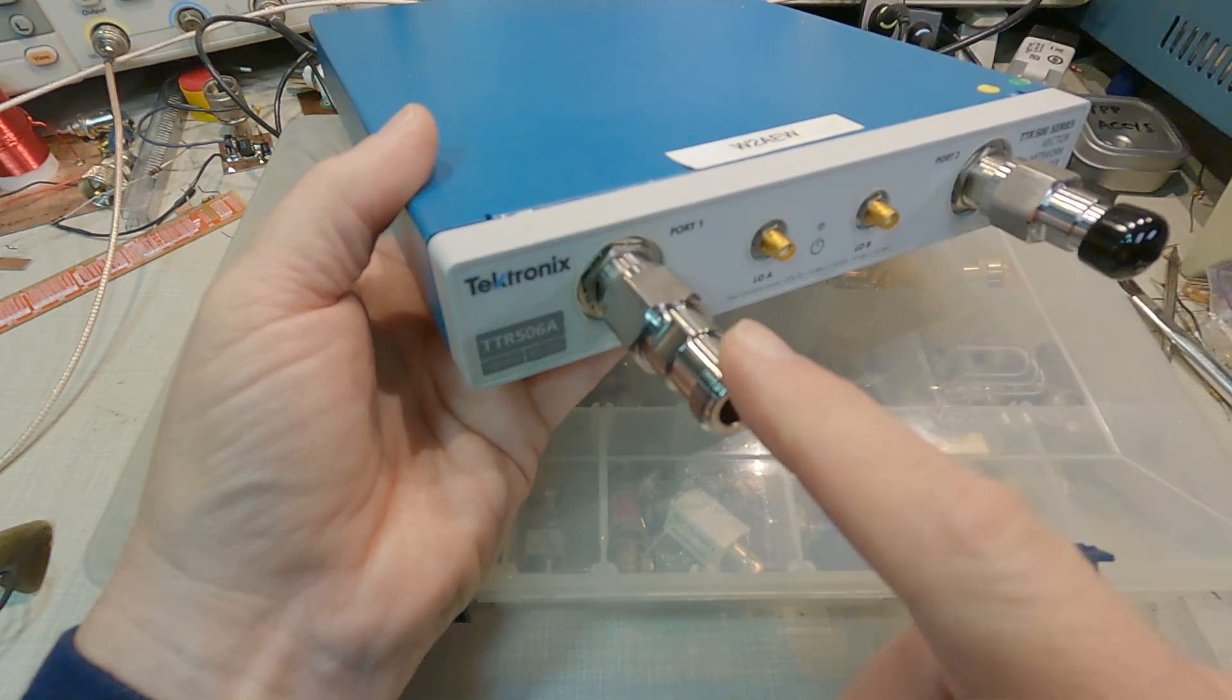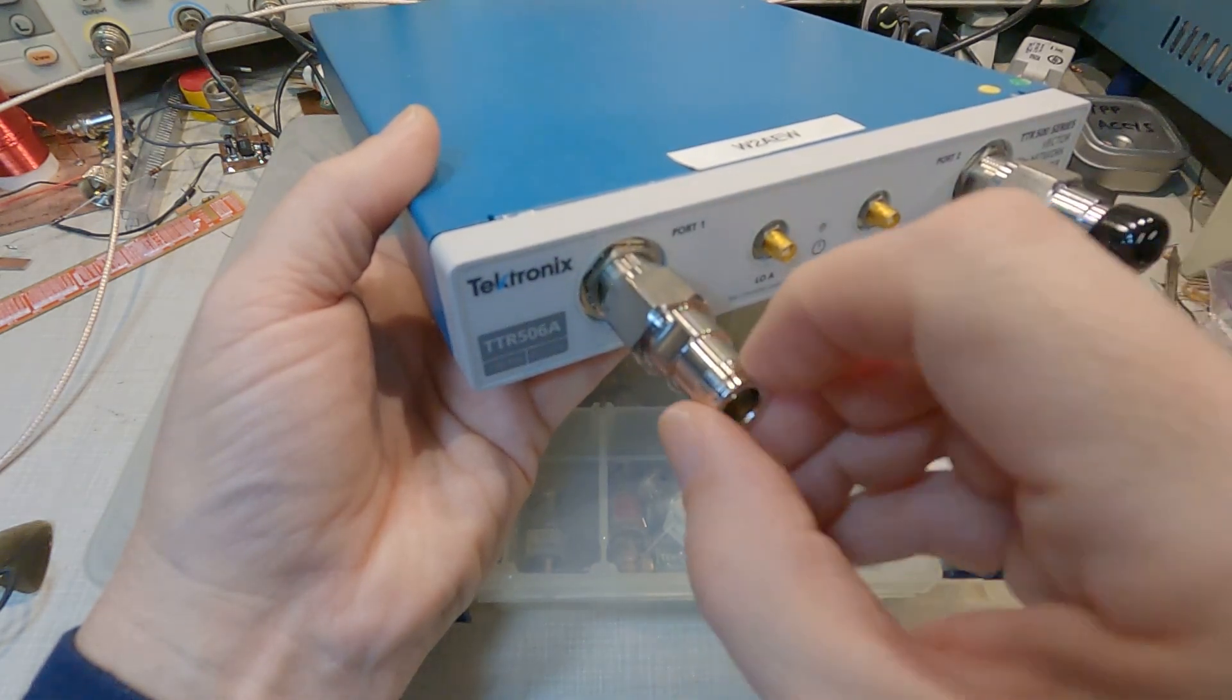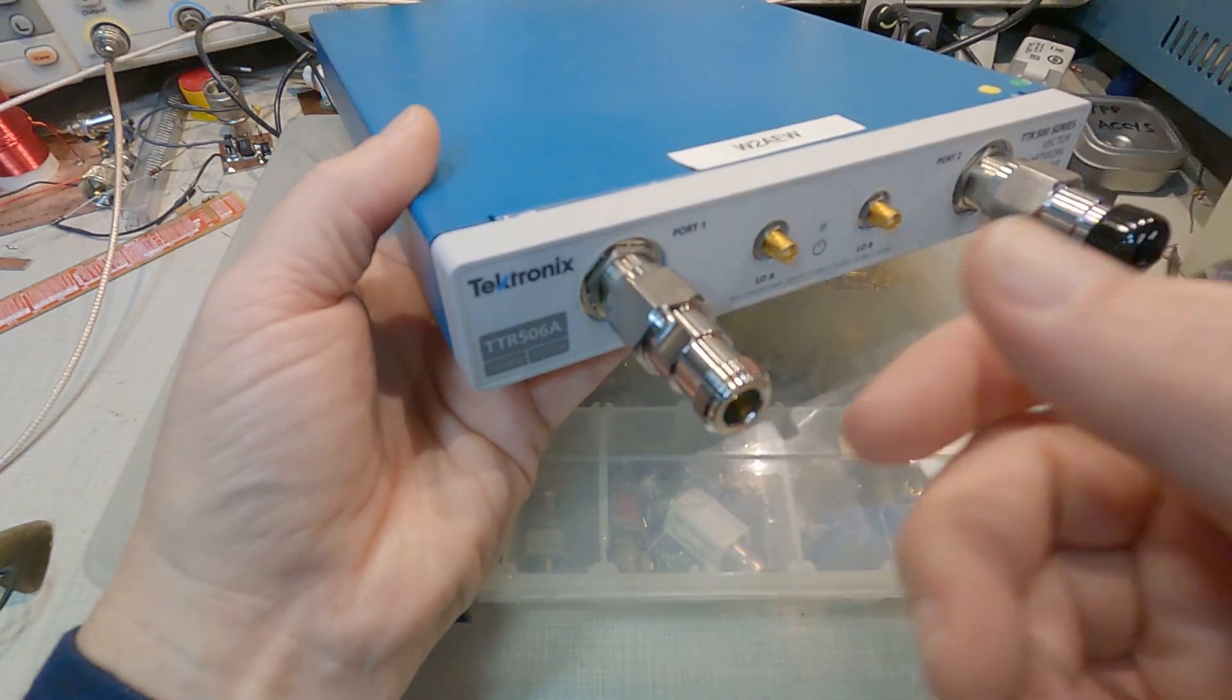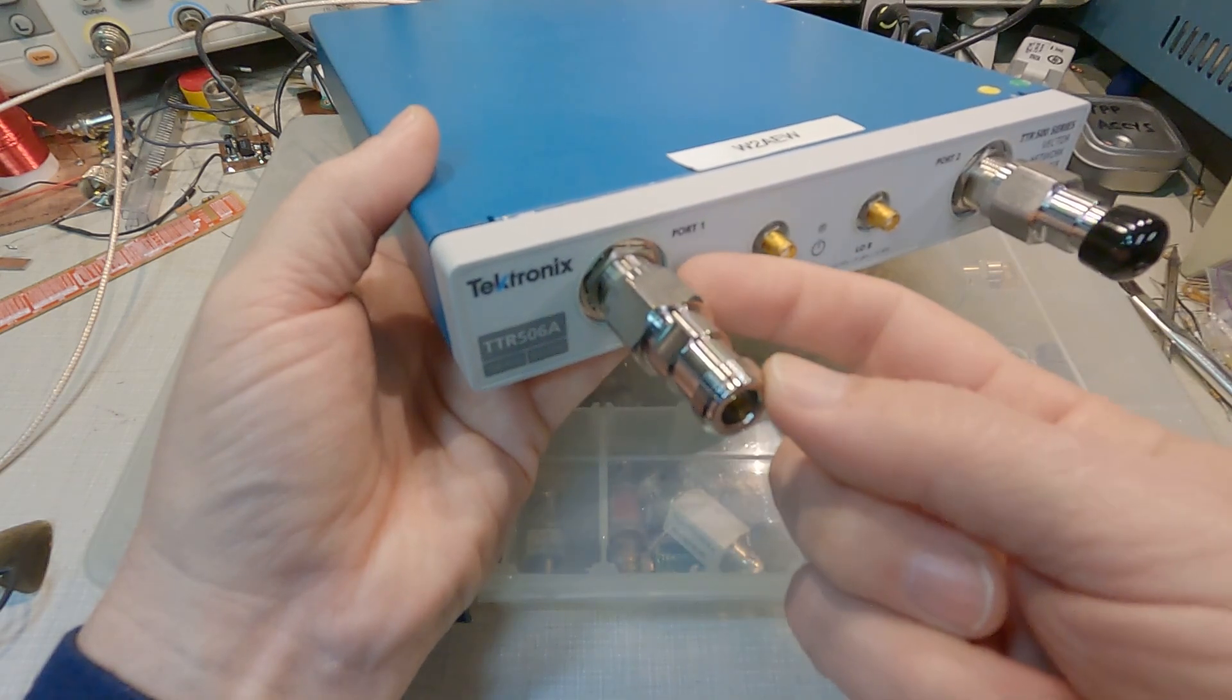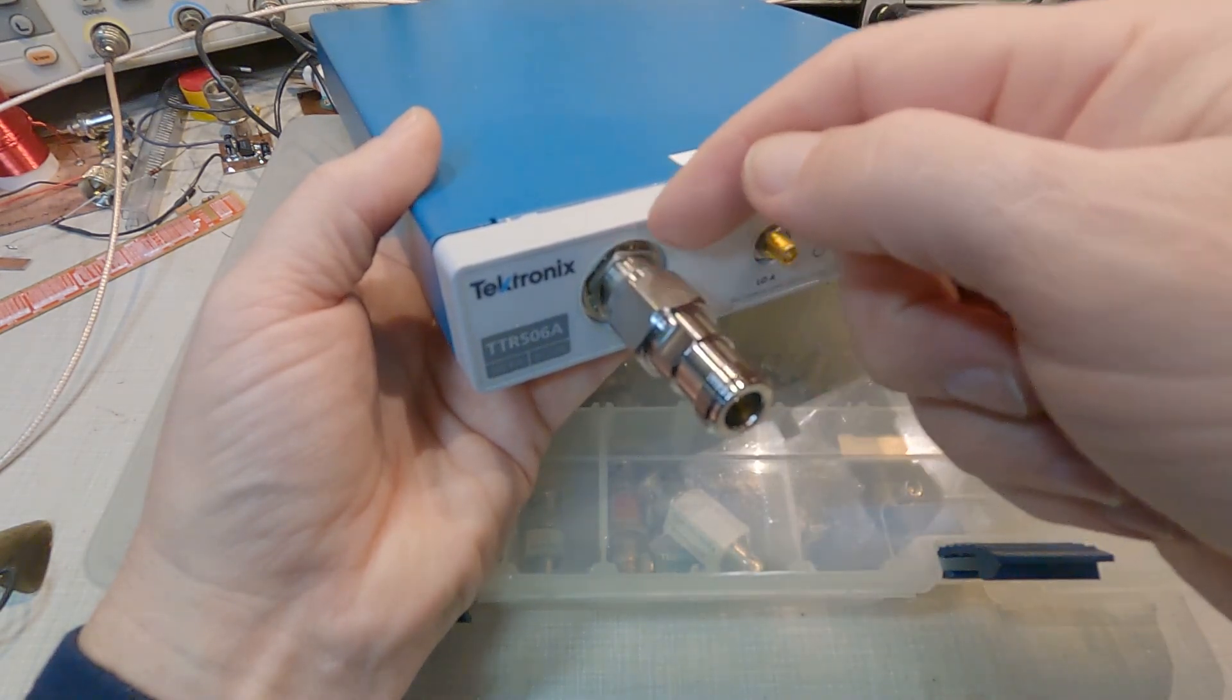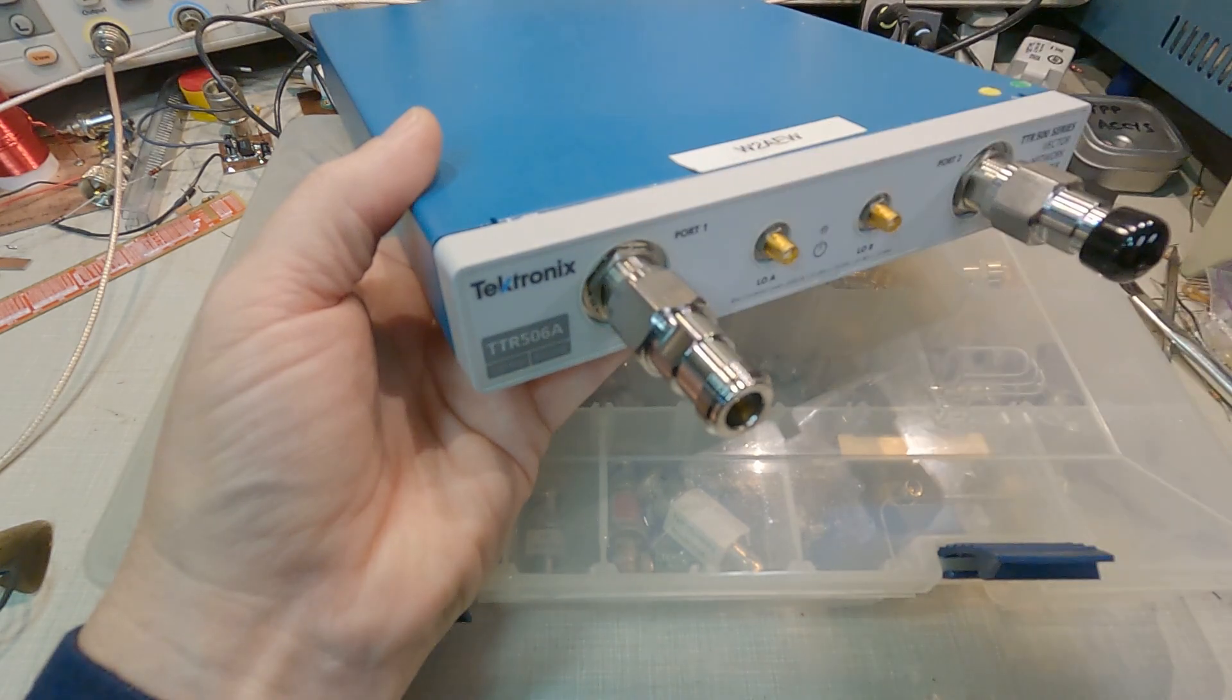so that if this gets damaged, bent, the threads get messed up, or even something gets banged into this, I can simply replace this relatively inexpensive connector saver and still preserve the nice pristine connector that's on the instrument itself.